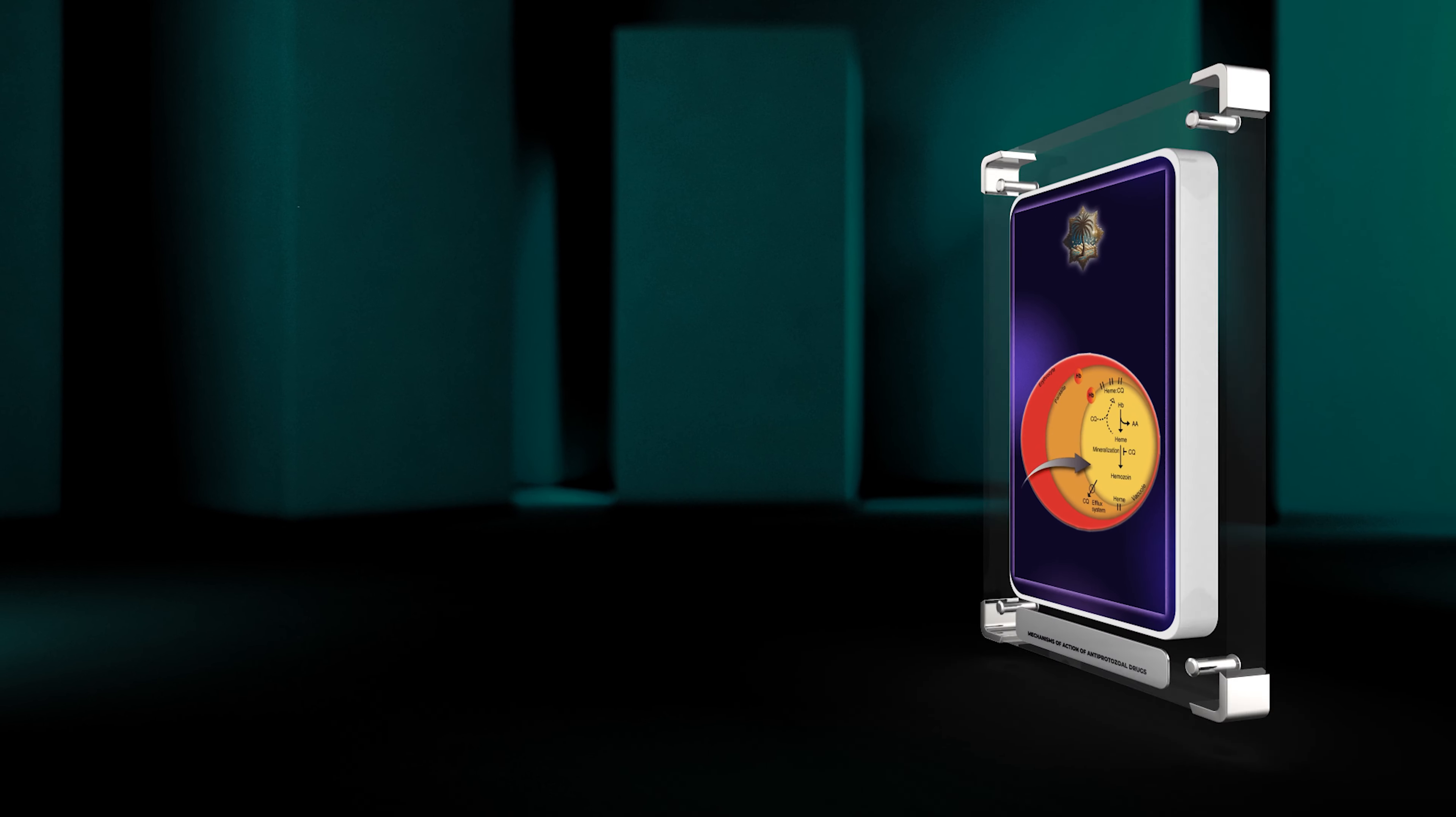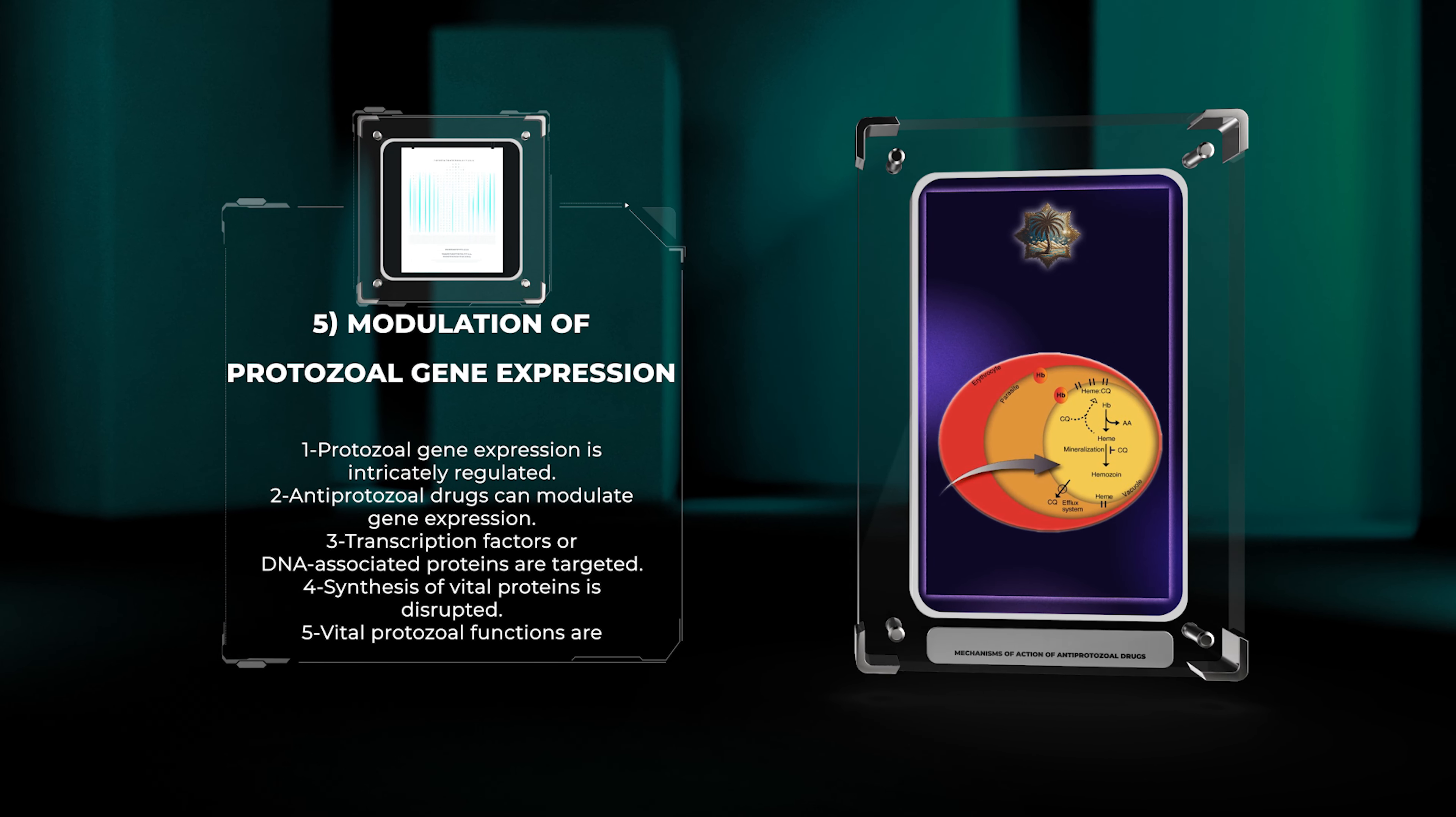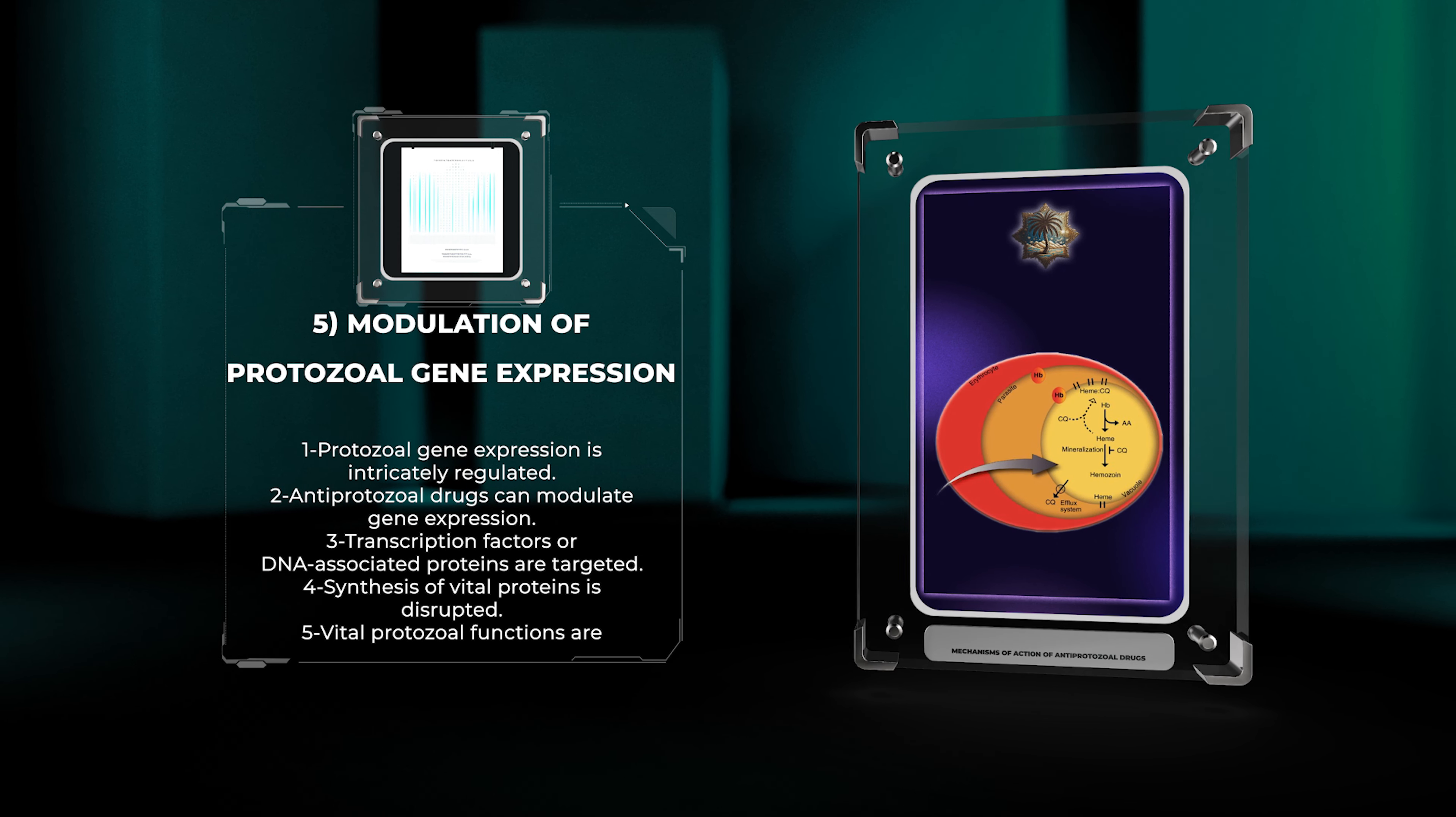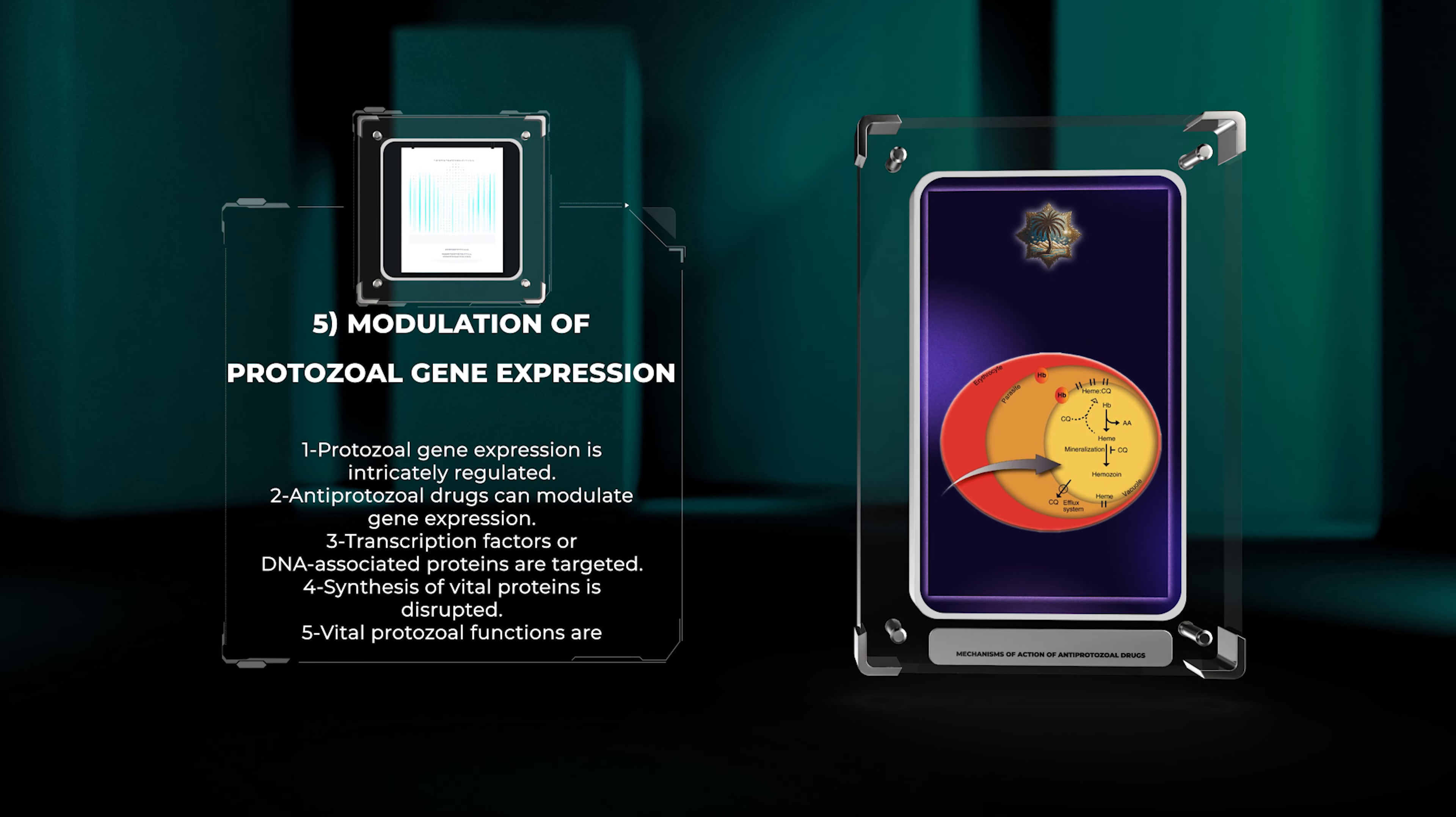Protozoal gene expression is intricately regulated to ensure the production of essential proteins required for pathogenicity. Antiprotozoal drugs can modulate gene expression by selectively targeting transcription factors or DNA-associated proteins. By interfering with these molecular machinery, the drugs disrupt the synthesis of vital proteins, leading to the inhibition of vital protozoal functions and ultimately impeding their survival.